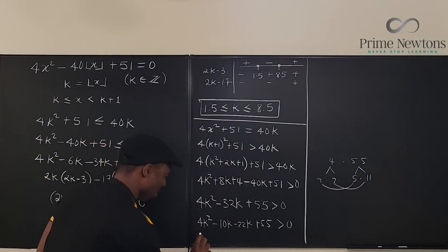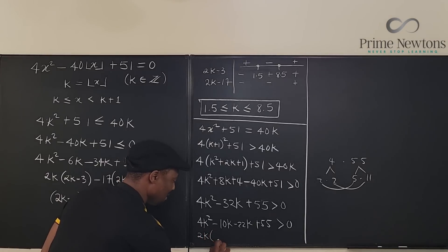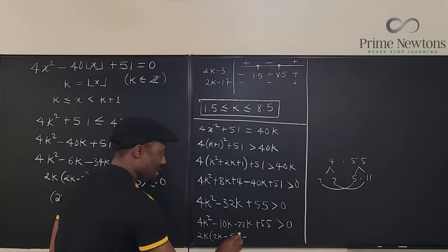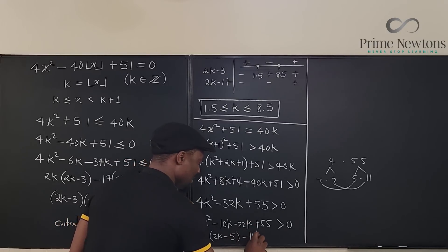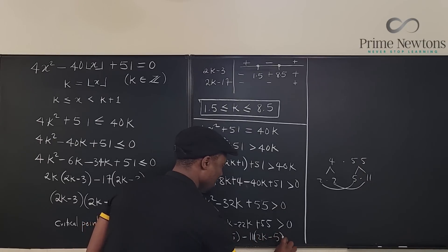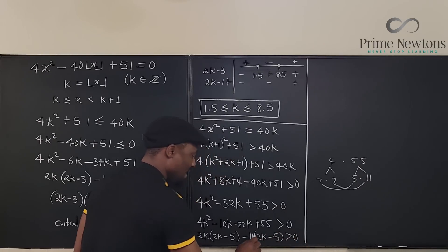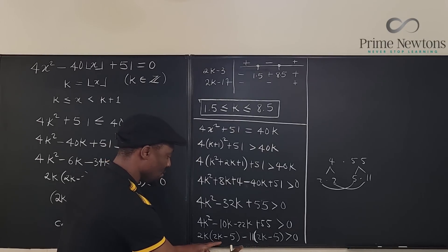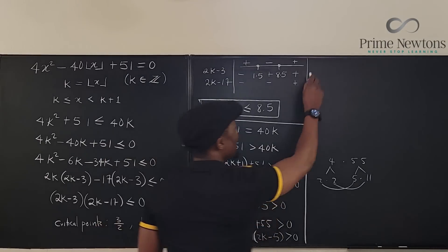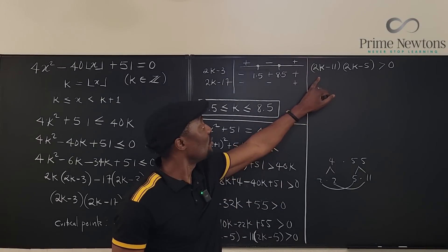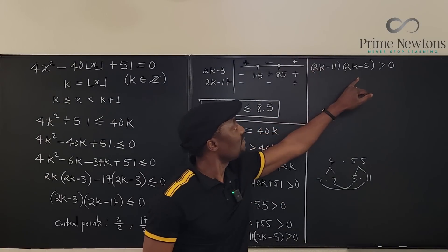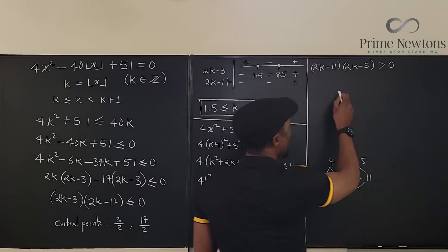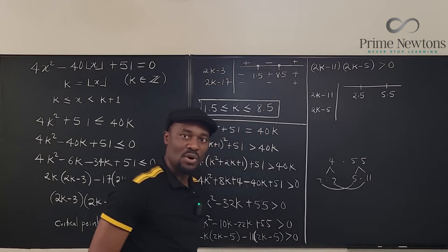So I can write this as 4k² - 10k - 22k + 55 is greater than 0. And when I factor these two, I'm going to squeeze it in here. This is going to be 2k times (2k - 5) minus 11 times (2k - 5) is greater than 0. So it's the same story as we told before. We're going to end up with 2k - 11 and 2k - 5. So the critical numbers we're going to be getting here will be 11/2 and 5/2. So we're going to have our number line here. So we're going to test the points.